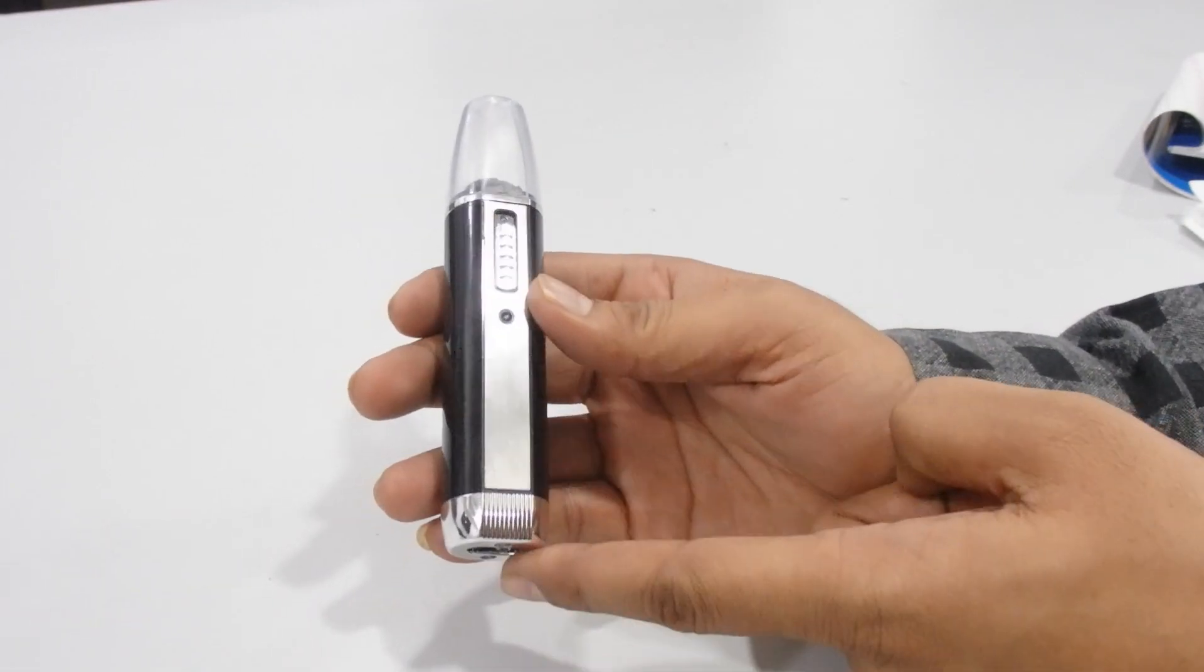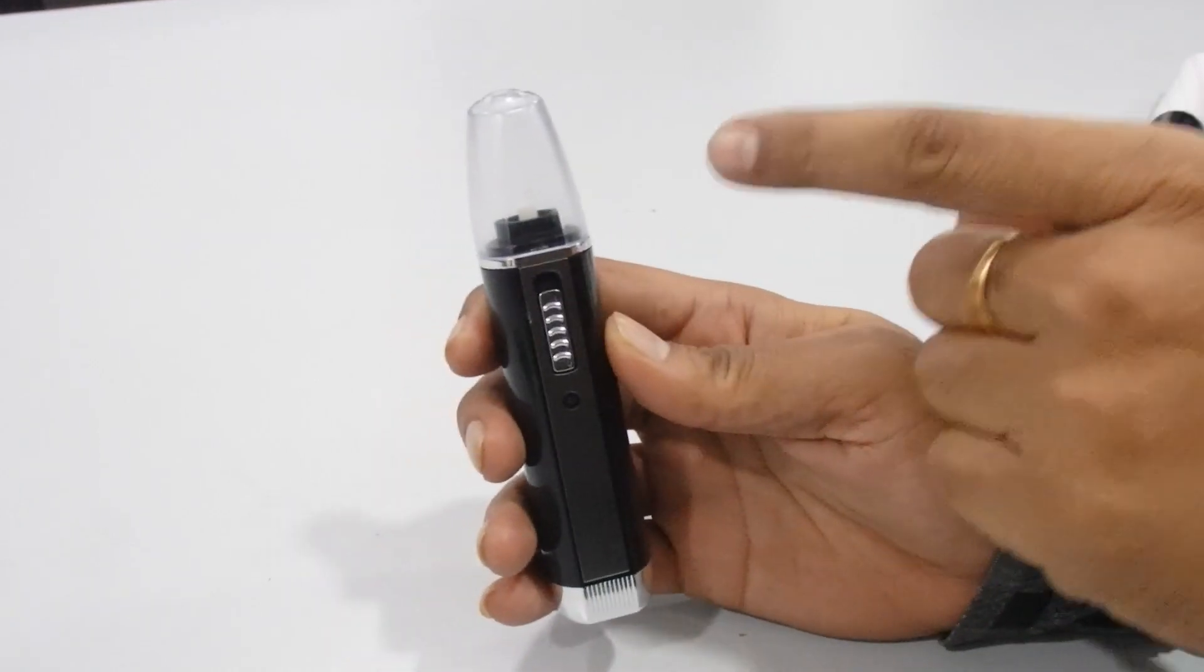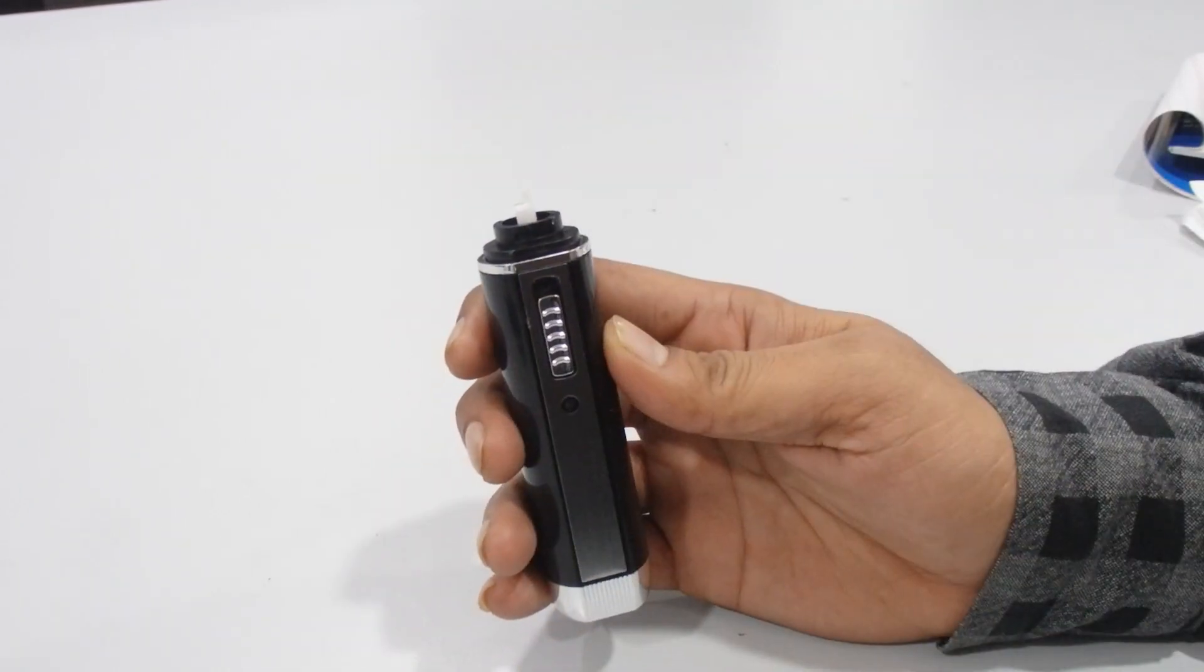Once you put it on charge, this LED indicator will show you that the item is charging. Now let's open this cap and check each trimmer one by one.